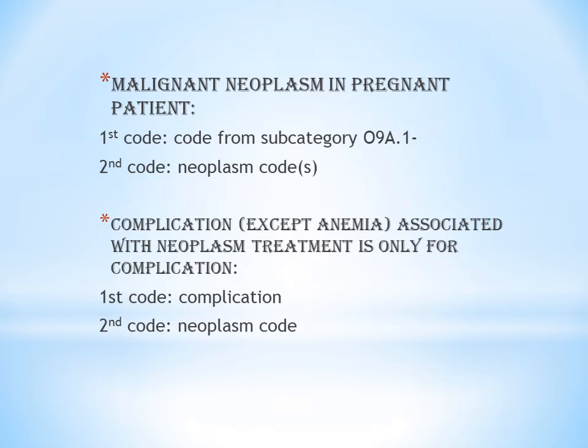Next is malignant neoplasm in a pregnant patient. In all pregnant cases, the pregnancy code always has sequencing priority over all other codes — the pregnant condition will have an O code. As we have seen in previous videos for HIV and diabetes, there will be an O code first and then the corresponding chapter code. Similarly, in a pregnant patient with malignant neoplasm, the first code will be O9A.1 — pregnancy complicated by neoplasm — and the second code will be the corresponding neoplasm code.